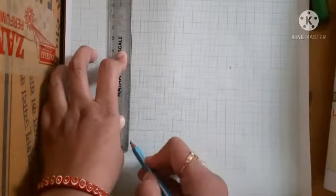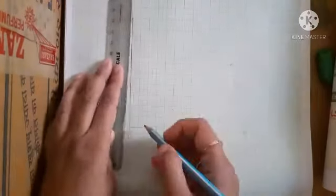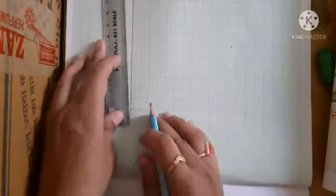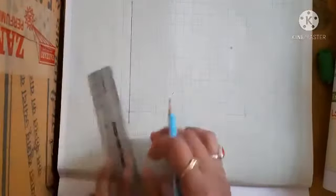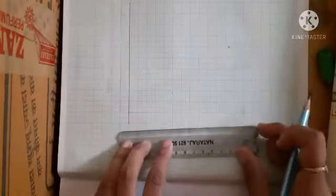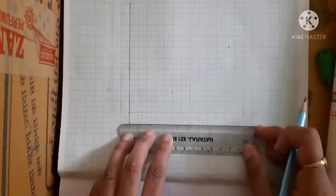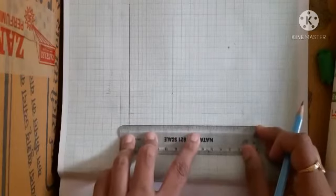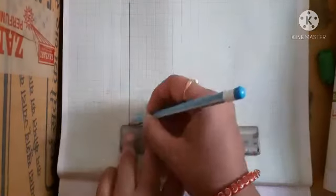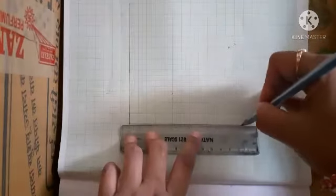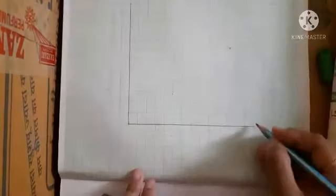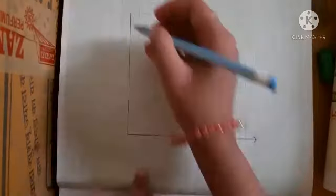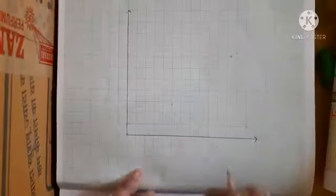So we will draw this line. Similarly on this side also, we will draw another line. So this was a vertical line. Now we will be drawing a horizontal line. We will mark arrows at the end, just like this.